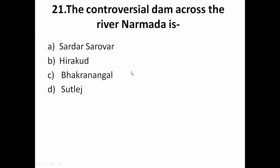The controversial dam across the river Narmada is: A — Sardar Sarovar, B — Hirakud, C — Bhakra Nangal, D — Sutlej. This is where the Narmada Bachao Andolan led by Medha Patkar took place. The correct answer is A — Sardar Sarovar Dam.